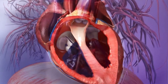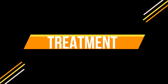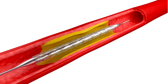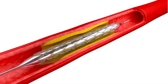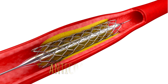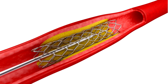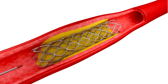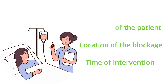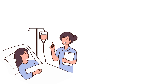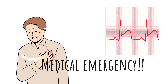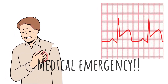Treatment for a heart attack involves quickly restoring blood flow to the blocked artery to minimize damage to the muscle. This is typically done through procedures like angioplasty and stent placement, or through the administration of clot-busting medications. The choice of treatment depends on factors such as the patient's condition, the location of the blockage, and the timing of intervention. Early recognition of heart attack symptoms and seeking prompt medical attention are crucial for improving outcomes.